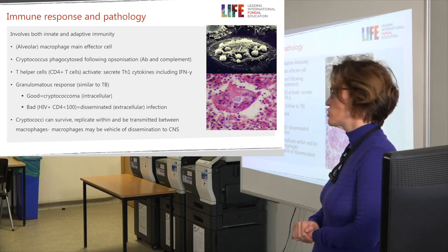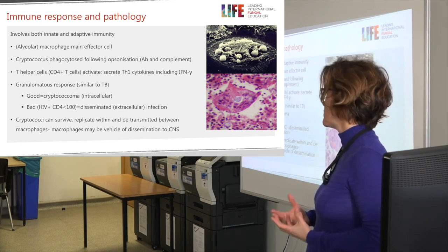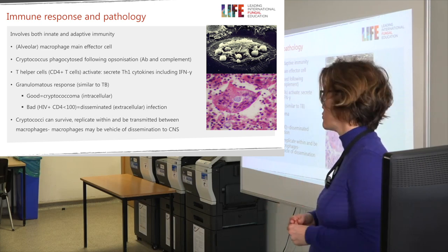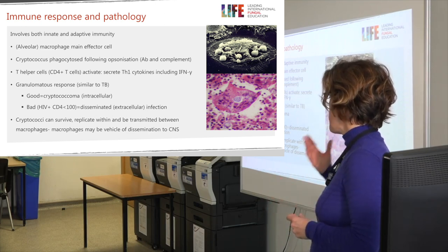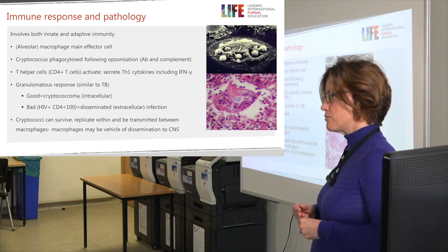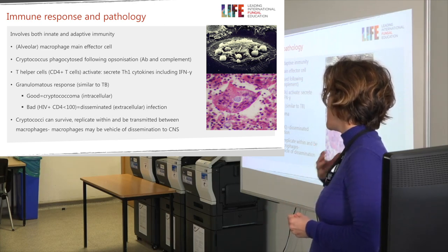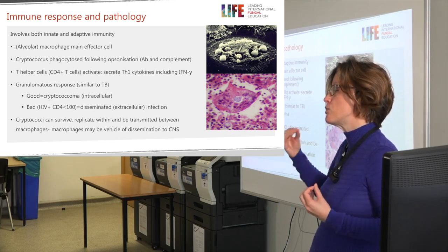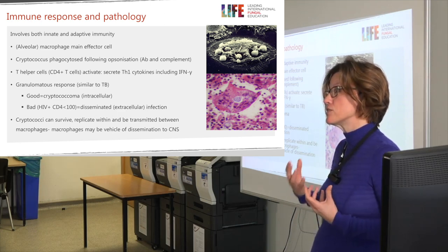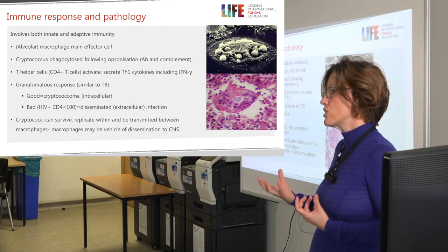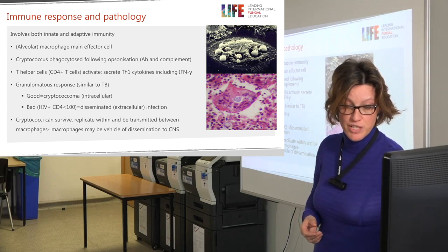However, in advanced HIV where there is very little T helper cell activity, the infection is not contained and becomes disseminated, with the organism predominantly extracellular — as seen in brain lesions examined on autopsy. Cryptococci have adapted partly through their capsule and also through having a melanin pigment in their cell walls to survive, replicate, and even be transported from one macrophage to another. The macrophage within the bloodstream is thought to be one of the vehicles of dissemination, whereby cryptococci inside the macrophage are trafficked through the blood-brain barrier into the brain to establish infection.